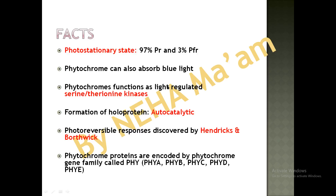Phytochrome is also known to function as light-regulated serine-threonine kinases — enzymes which add phosphate to a particular amino acid. Whenever there is presence of light, the phytochrome can autophosphorylate; that is, it has autocatalytic property. The photoreversible responses related to phytochrome were discovered by experiments performed by Hendricks and Borthwick.